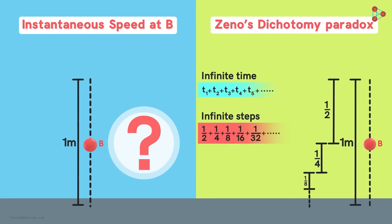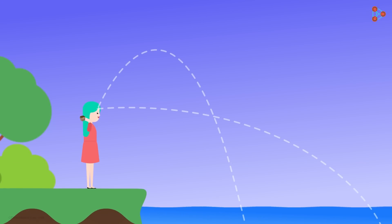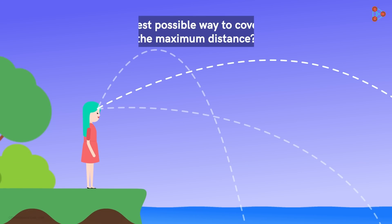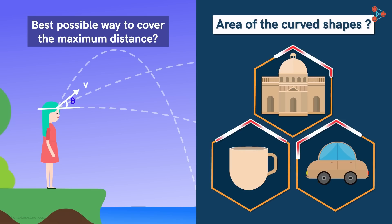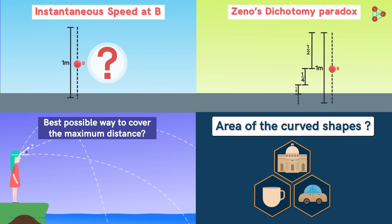There were two more interesting problems we had discussed. Let's say we are standing on a cliff — what is the best way to throw a stone such that it covers maximum distance? And the other problem was, how can we find the area of any shape, especially one whose boundary is made up of curved lines? We know that calculus gives us the answer to all these problems. The question is, how?